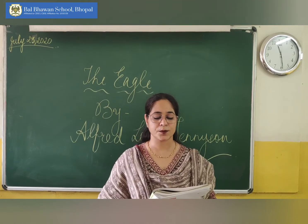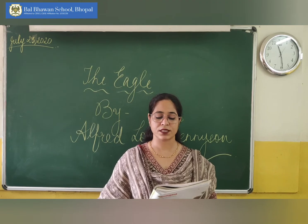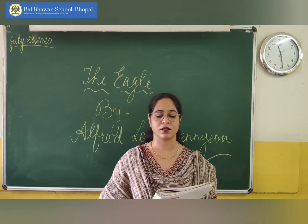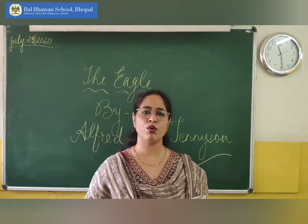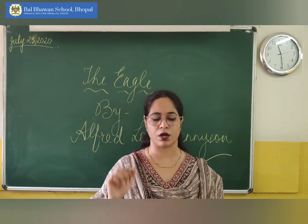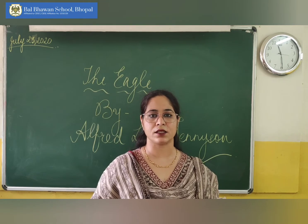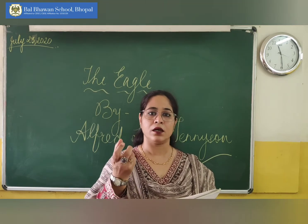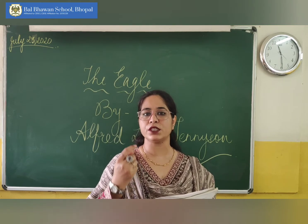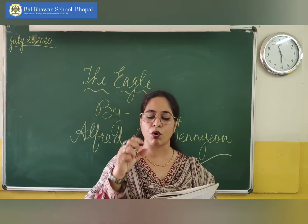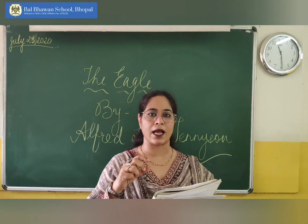He clasped the crag with crooked hands, close to the sun in lonely lands. Here, the poet is talking about the eagle who is perched upon a rock. He clasped the crag with crooked hands — the eagle perched upon the high rock is holding the rock tightly with crooked hands.